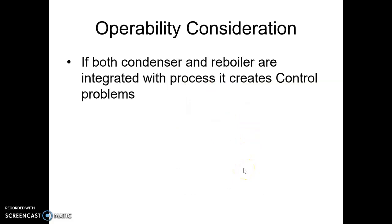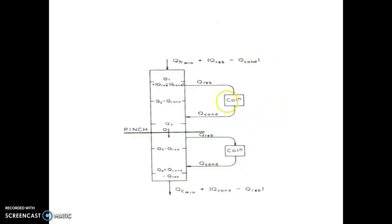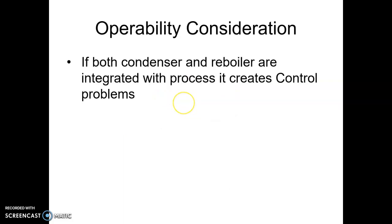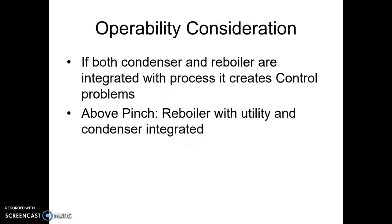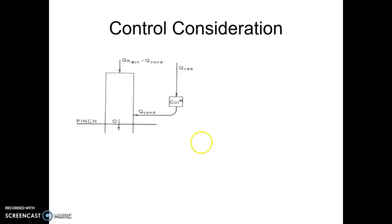Now there are certain operational issues. If we integrate both reboiler and condenser of the column with the process, naturally it will be difficult to start up or shut down the column. So in order to avoid this, we may integrate only one of the — reboiler or condenser. If both condenser and reboiler are integrated, the process will have an issue in terms of controlling. So above the pinch, we integrate the reboiler with utility — we supply the reboiler with utility and integrate only the condenser.